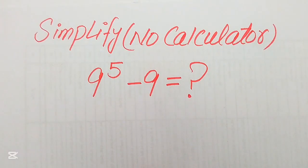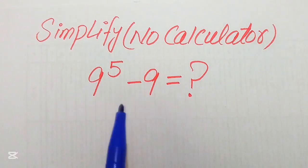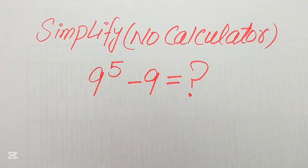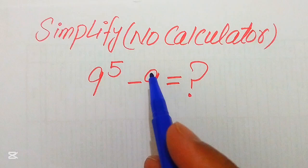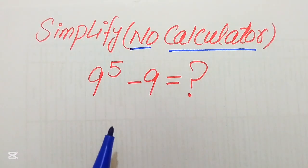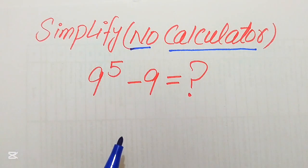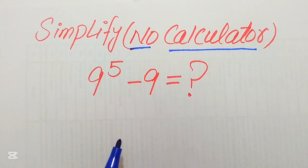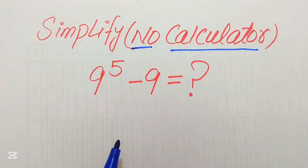Hello everyone, today I want to show you how to simplify this nice algebraic expression. We have 9 to the power of 5 minus 9, and we need to write this algebraic expression in its lowest form. A calculator is not allowed, which means we will show all of the working on paper. If you have any other method in mind, please don't hesitate to write it in the comment section.